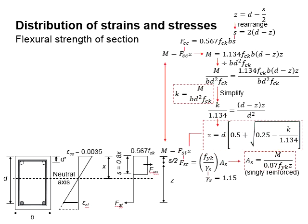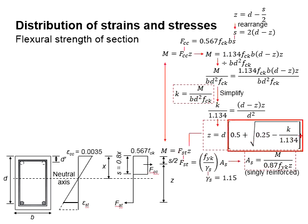Going back to the equations, the value from the lever arm equation should be less than 0.95 and theoretically greater than 0.82. By substituting the moment, the design strength of the steel, and calculating the lever arm, you can determine the amount of reinforcement bar required in the reinforced concrete section.